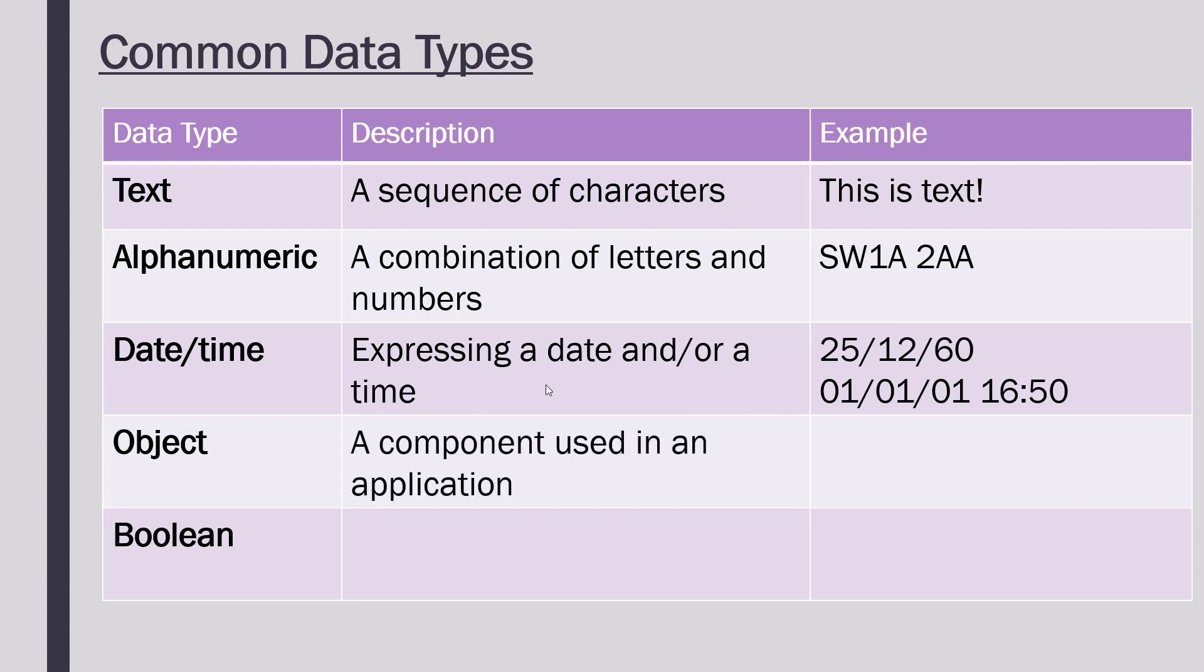An object is a little bit of a funny one because an object as a data type is really just any component which is used in an application. You can think about things like if you are in PowerPoint, right now I'm doing a PowerPoint presentation, I've got a table here, the table is an object in my slide. It's a component within my slide. I could break it down further. I could have a heading, my heading row as an object too. In things like Microsoft Excel, a spreadsheet, you might have a graph, a chart that would be an object as well. So it's quite a general data type for any component used in a program.